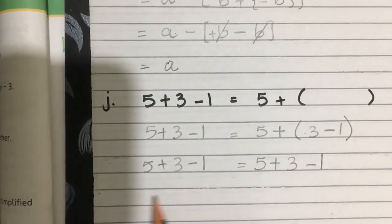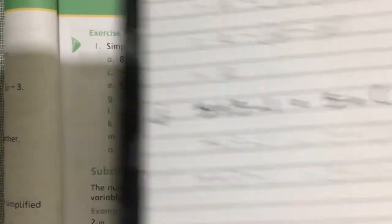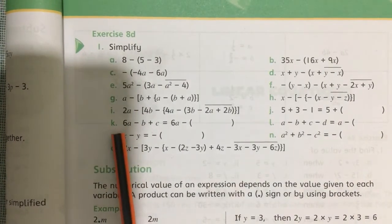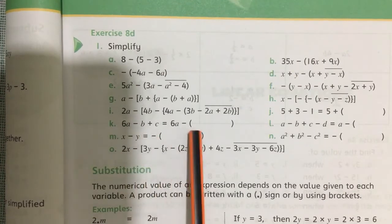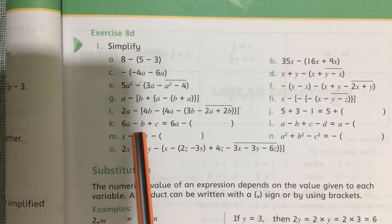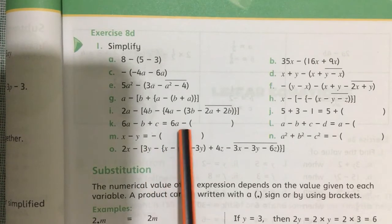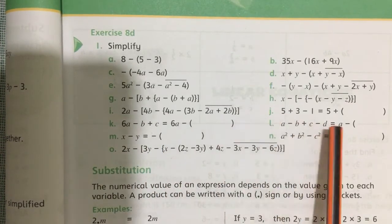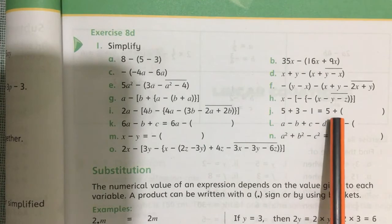You can solve it further, but this is the answer. Then comes k. K is also the same. Here you have to write the answer inside this bracket. 6a minus b plus c equals 6a minus bracket. In part j, there was a plus sign outside, but here there is a minus sign outside.